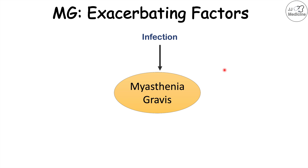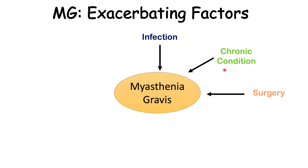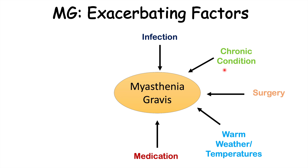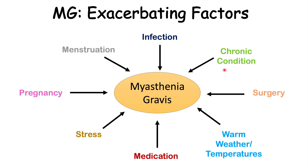Exacerbating factors include infection, chronic conditions like diabetes, surgery, warm weather or hot temperatures, certain medications, stress, pregnancy, and menstruation. All of these are factors that can increase the severity of symptoms of myasthenia gravis and increase the risk of having a myasthenic crisis.